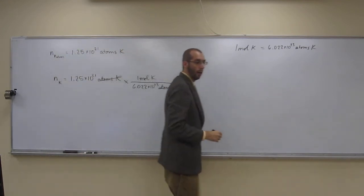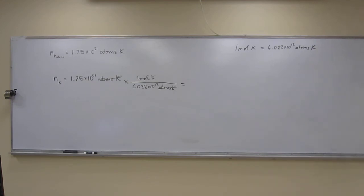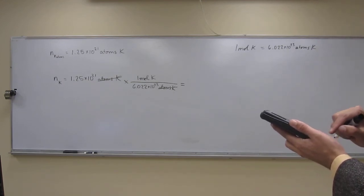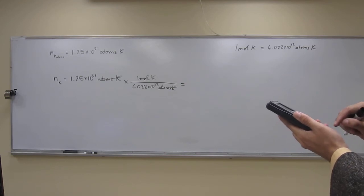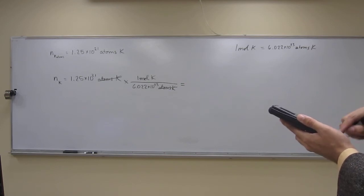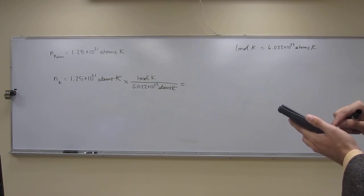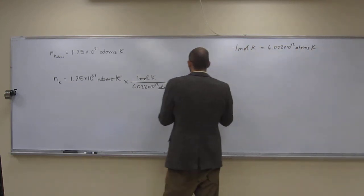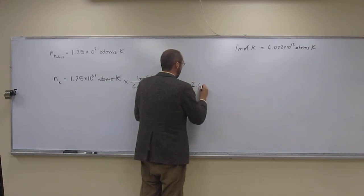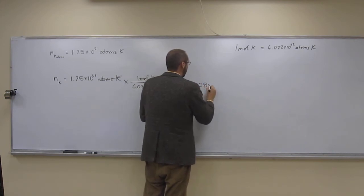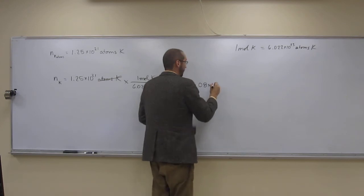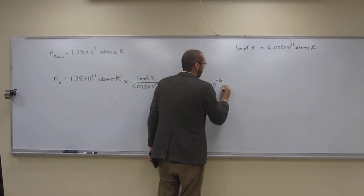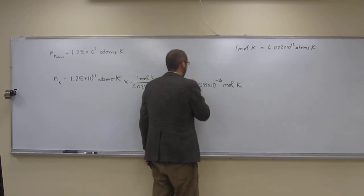Okay, so now all it is is just plug them into your calculator and you're done. So 1.25 e to the 21, divide that by Avogadro's number 6.022 e to the 23rd. And I get what is a small number? As you would expect, 2.08 times 10 to the negative 3 moles of potassium.